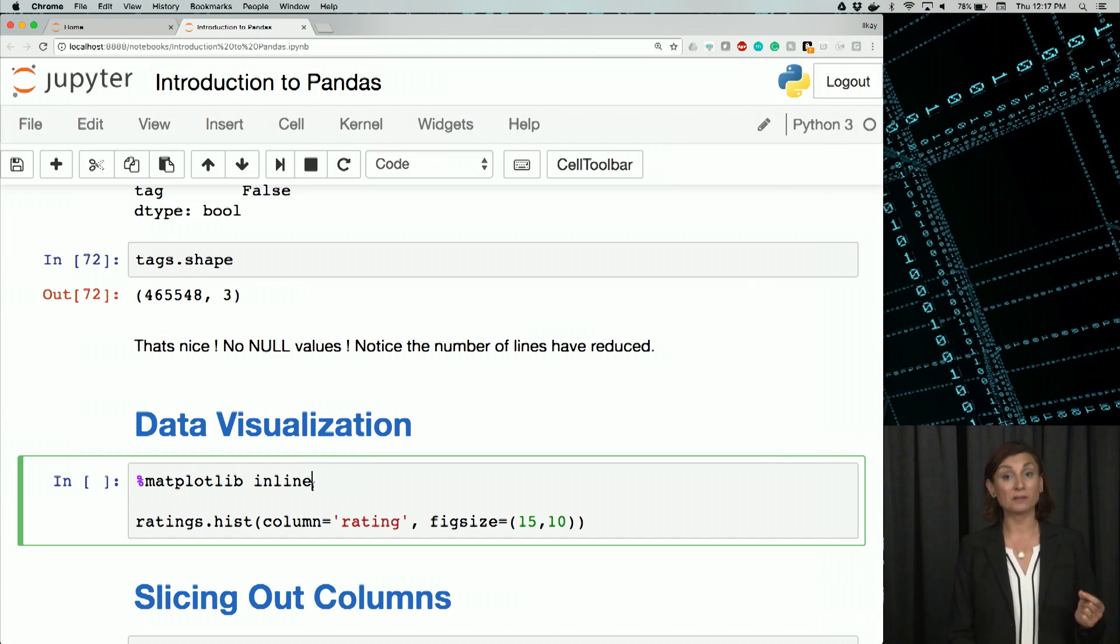This is a symbol for a special class of functions in Jupyter called magic functions. So we'll simply here, before we go through Matplotlib as a library, review or use Matplotlib as an inline function.